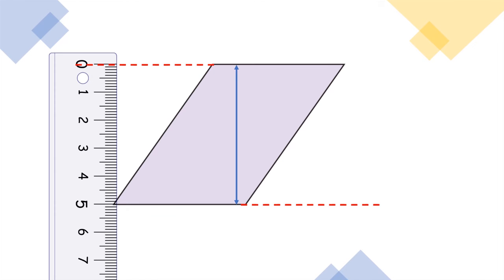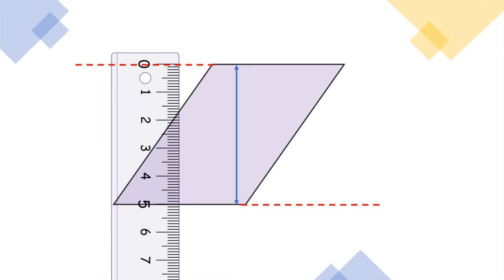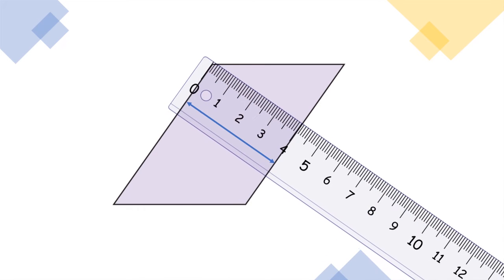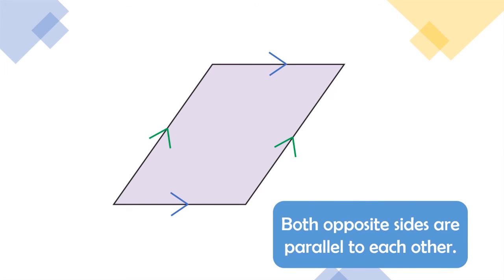A parallelogram of course has parallel lines. Why not try to find the parallel lines in a parallelogram? Let us use a ruler to measure the distance between the opposite sides. As we can see, both opposite sides are parallel to each other as they have the same distance. So both opposite sides are parallel to each other.